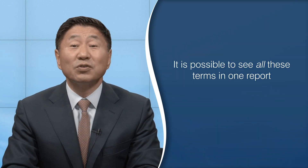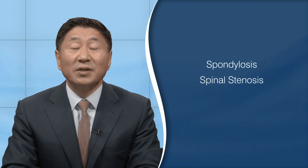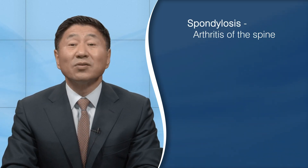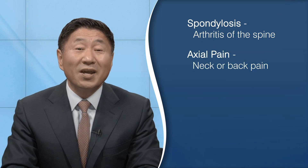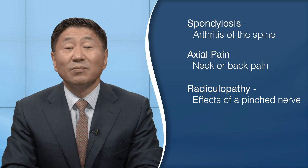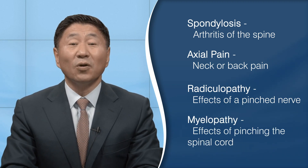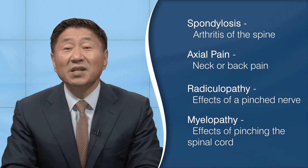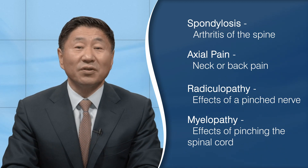Oftentimes, people have a combination of complaints, so you can also see in your report the use of all these terms. In prior blogs and videos, I defined the terms spondylosis, spinal stenosis, and also discussed the difference between a bulge and a disc herniation. These terms can sound scary and intimidating, so let me put them in layman's terms: spondylosis means arthritis of the spine; axial pain means neck or back pain; radiculopathy means the effects of a pinched nerve; myelopathy means the effects of pinching your whole spinal cord. Please understand that these terms are used by doctors so they can communicate with each other and for documentation. The words are not meant to be used by laypeople.